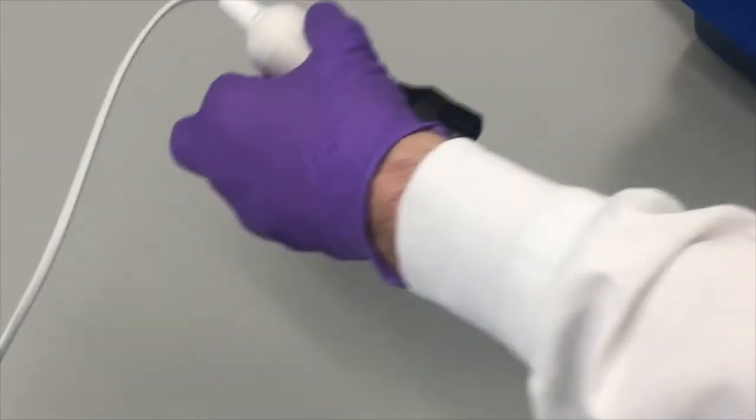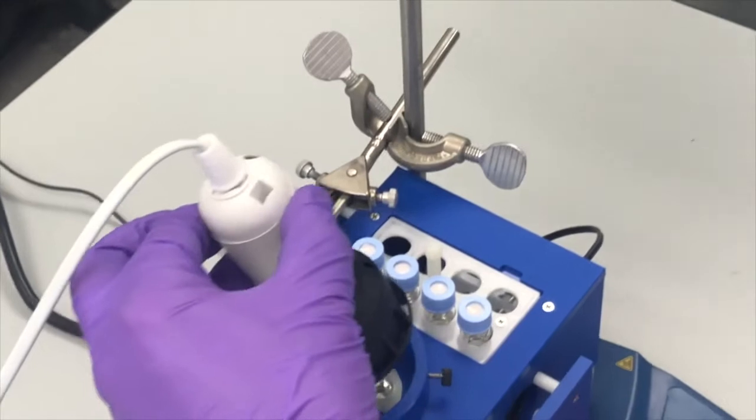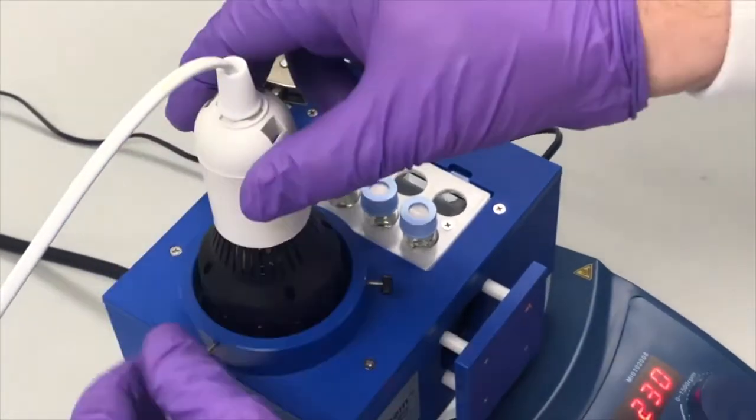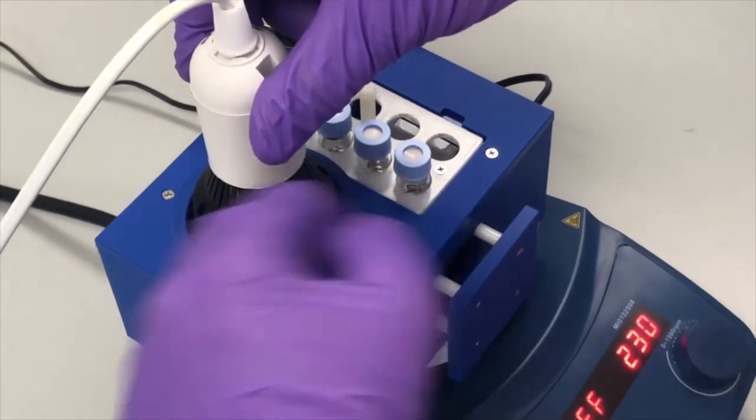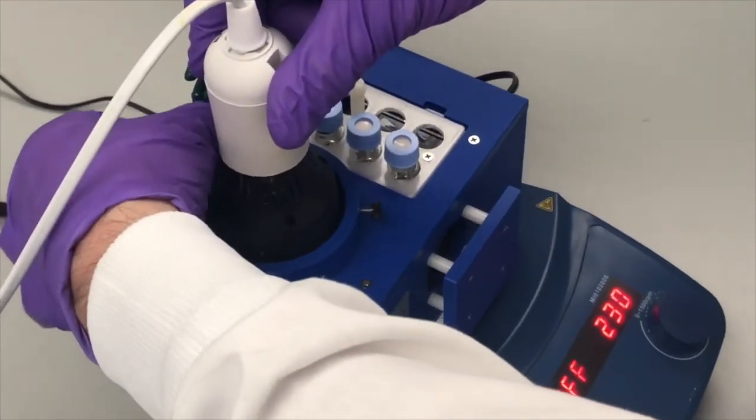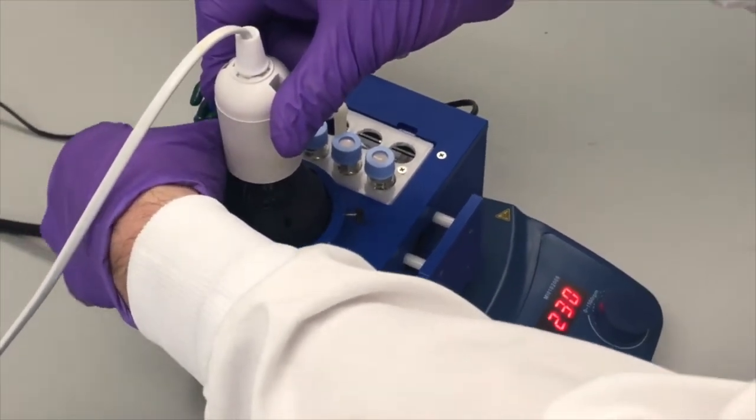Once your vials are prepared simply place them in the appropriate EvaluChem holder and place the holder into the reaction chamber. Then simply secure the appropriate light source for your reaction to the light source mount and activate the light source.